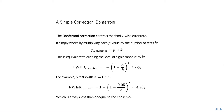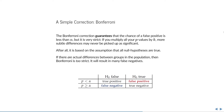For example, if we have 5 tests and we have an alpha value of 0.05, then we simply divide 0.05 by the number of tests 5, and we end up with a value that is close to or less than 5%. The Bonferroni correction guarantees that the chance of a false positive is less than alpha, but it is very strict. If you multiply all your p-values by k, then more subtle differences may never be picked up as significant, especially if you do a large number of tests. After all, the Bonferroni correction is based on the assumption that there are no differences in the population, or that all null hypotheses are true. If there are actual differences between the groups in the population, then Bonferroni is too strict, and it can result in too many false negatives.